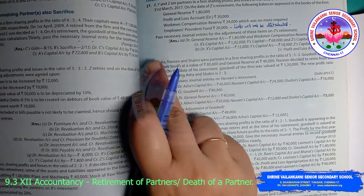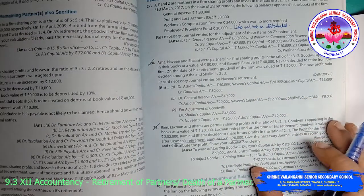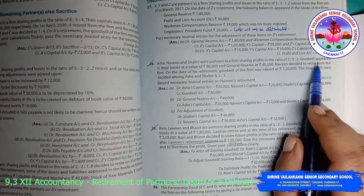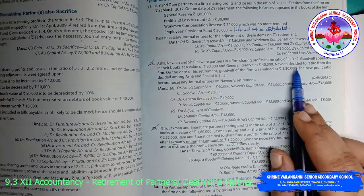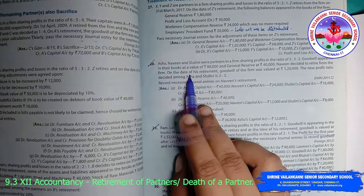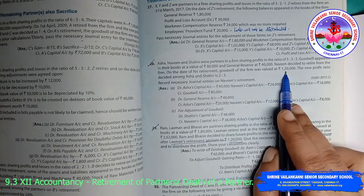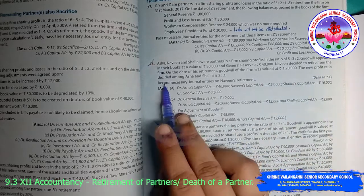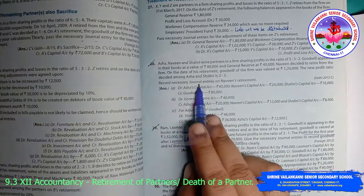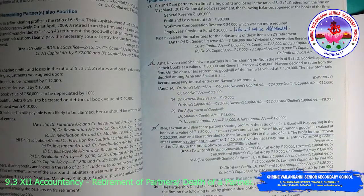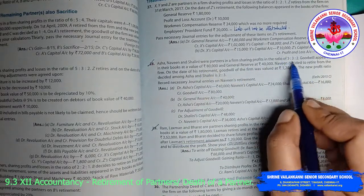Problem 28: Asha, Naveen and Shalini were partners in a firm sharing profits in the ratio of 5:3:2. Goodwill appeared in their books at 80,000 and general reserve at 40,000. Naveen decided to retire from the firm. On the date of his retirement, goodwill of the firm was valued at 1,20,000. The new profit sharing ratio between Asha and Shalini is 2:3.